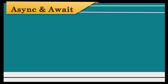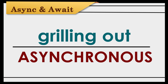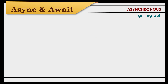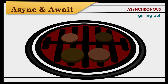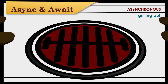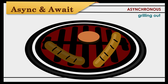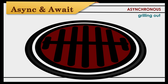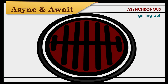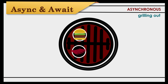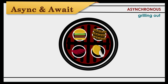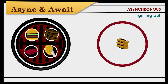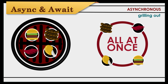On the other hand, grilling out is an asynchronous process. We don't wait for all of the hamburgers to finish cooking before starting to grill the hot dogs. We grill everything at the same time and remove each item as it's done. Our grills are usually full with not only hamburgers and hot dogs, but also corn, chicken, and ribs. All of the cooking happens simultaneously.